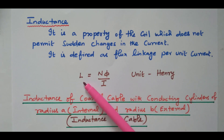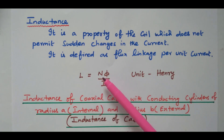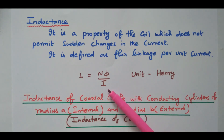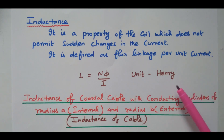This inductance is based on three parameters: number of turns in the coil, flux linking with the coil, and current flowing through the coil — N·π by I. The unit is Henry. So flux linkage per unit current.